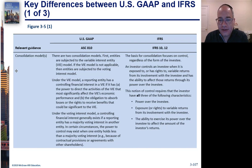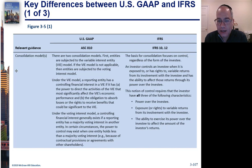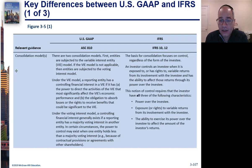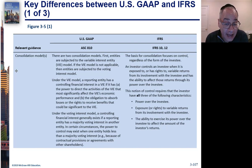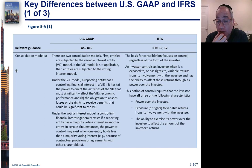Under ASC, there are two consolidation models. First, the Variable Interest Entity Model. If that doesn't apply — if you don't have a Variable Interest Entity — then you are subject to the Voting Interest Model. Under the Variable Interest Entity Model, a reporting entity has controlling financial interest if it has the power to direct the activities most significantly affecting economic performance, and the obligation to absorb losses or receive benefits that could be significant to the VIE.